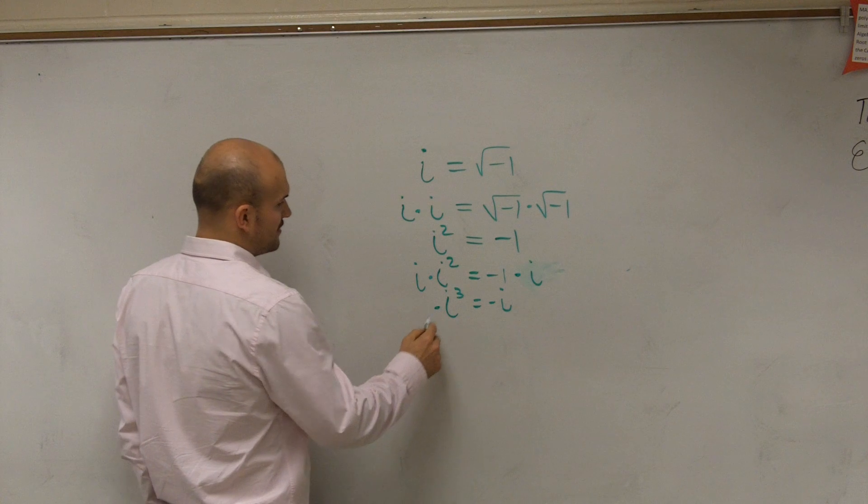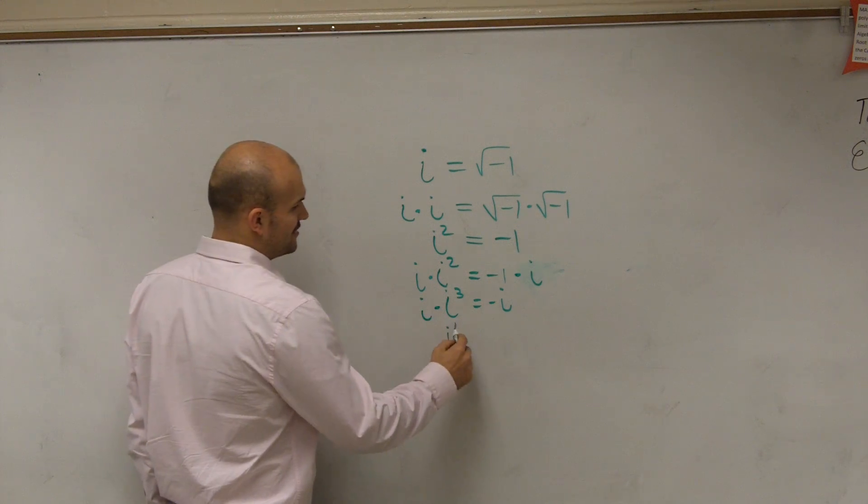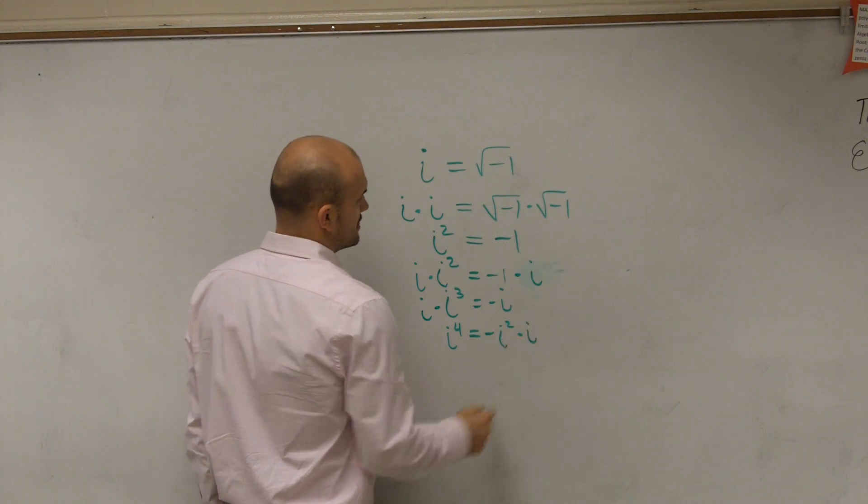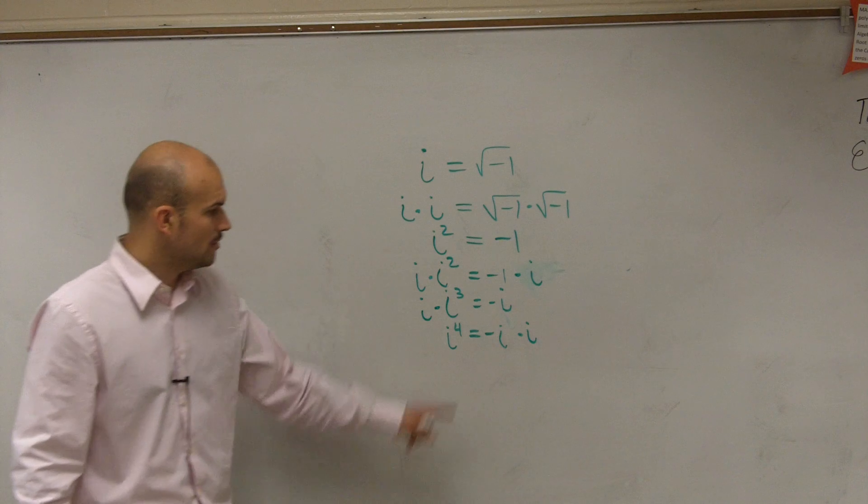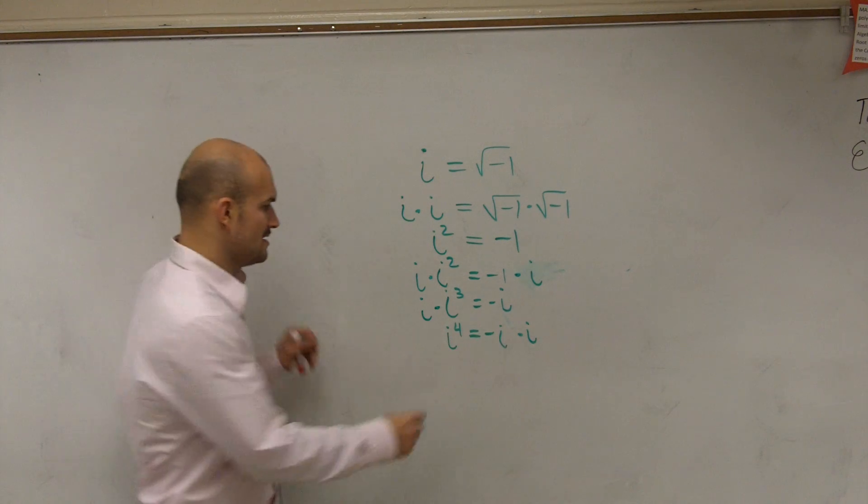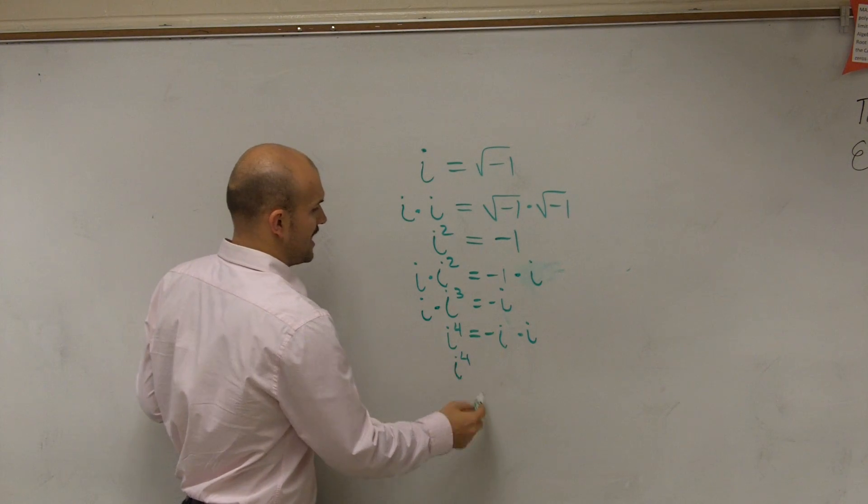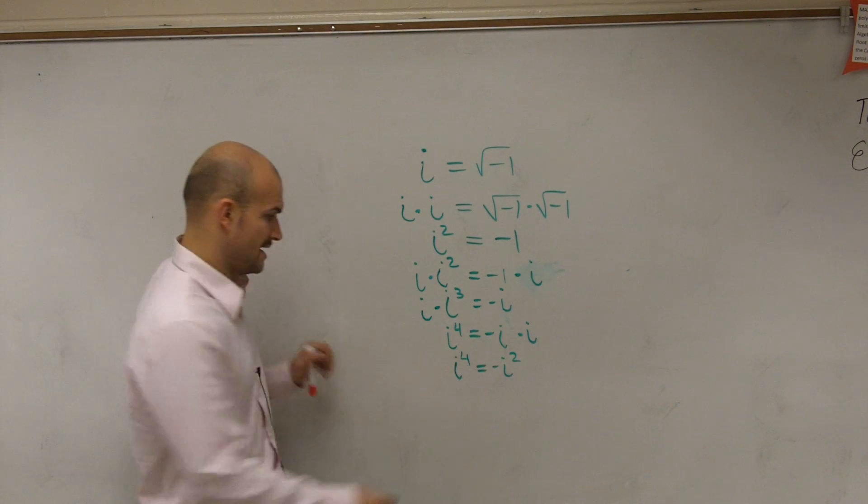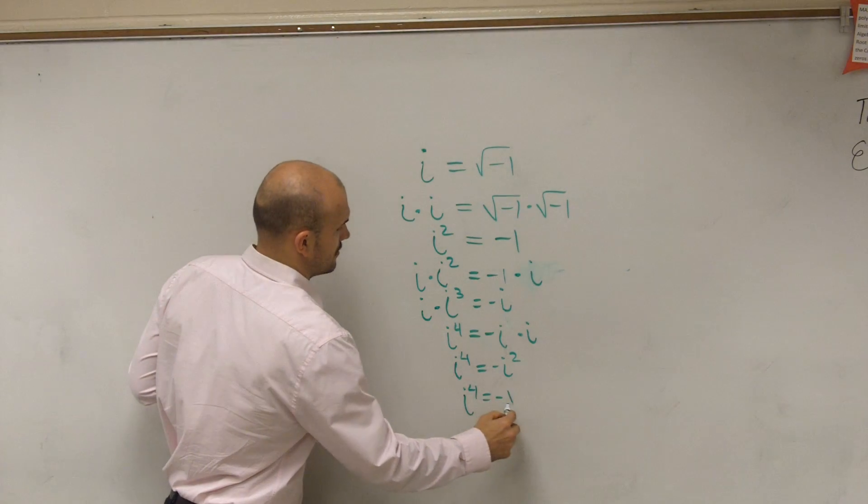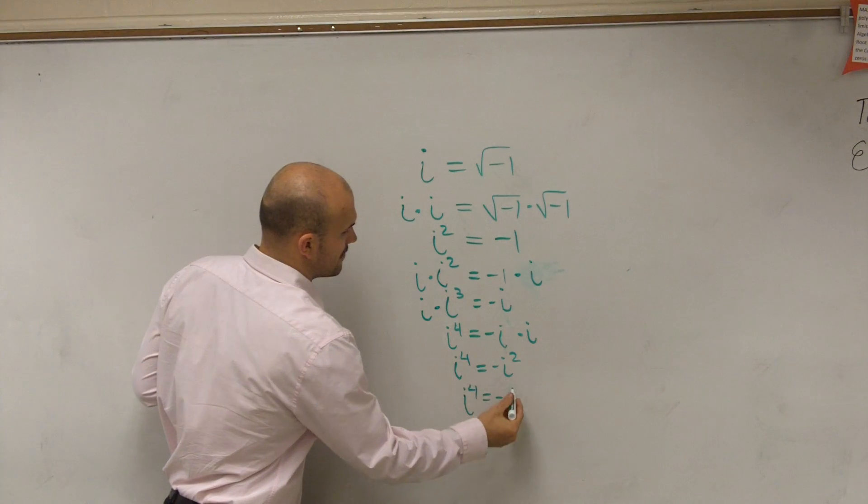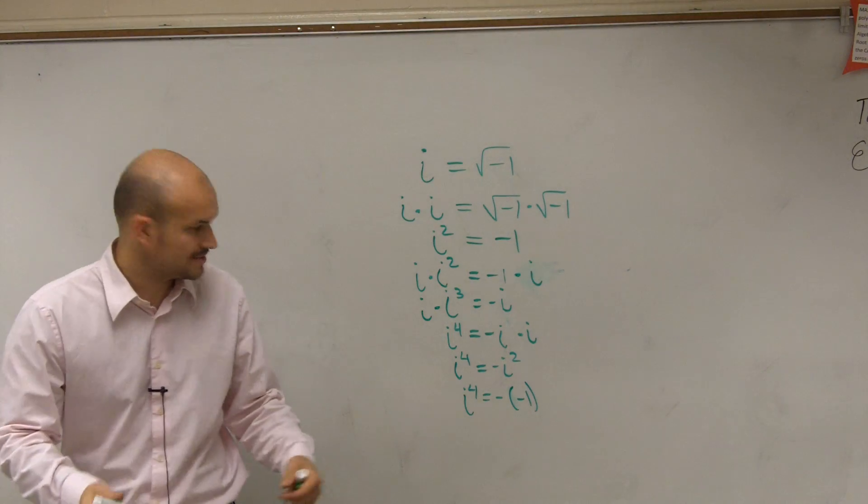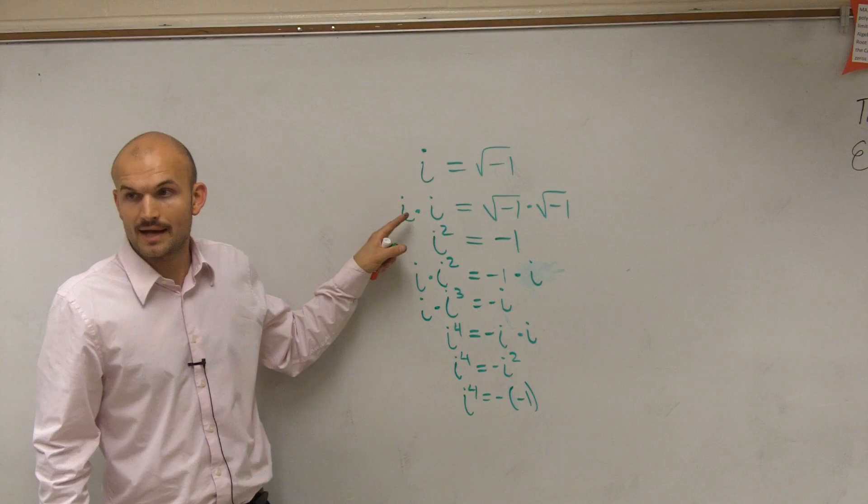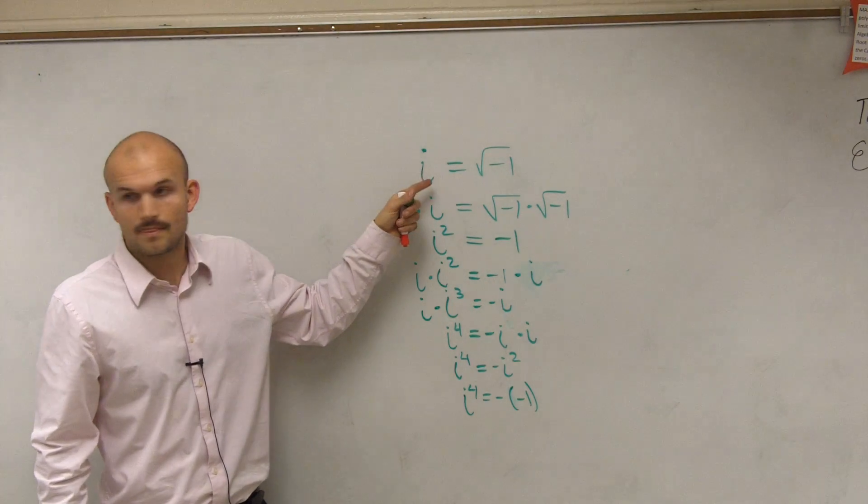Then let's multiply by i again. Why not, right? This is so much fun. i to the fourth would be negative i times i. So we get i to the fourth equals negative i squared. i squared is negative 1, so it's negative negative 1. Where would you like me to go back to? Do you understand what I'm multiplying by i?